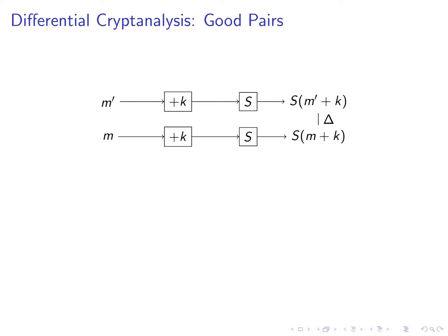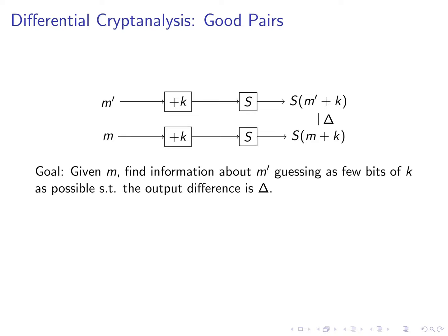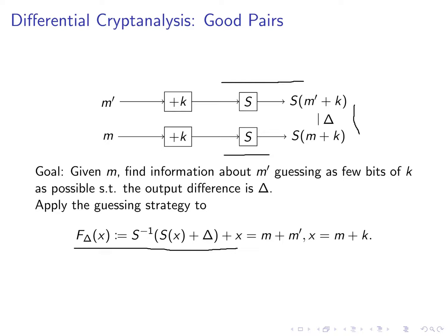We can assume that m is fixed. In this example we again have non-linear function s applied to a message m after adding a key. Instead of directly guessing k we can again guess the input to the s box m plus k denoted by x. We pass x through the s box. Then we add delta and then we pass back through the inverse s box. At this point we have modeled m' plus k. To remove the influence of k we simply add x. This yields the formula for the function f delta you see here which simply models the possible input differences leading to delta given m.